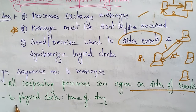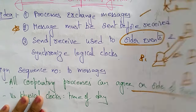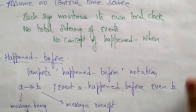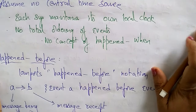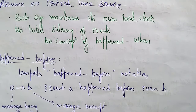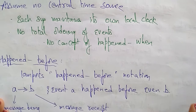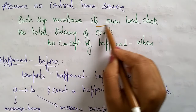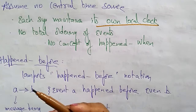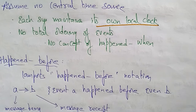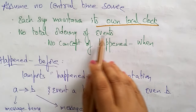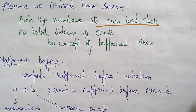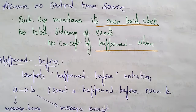Why are we assigning sequence numbers to messages? Because all cooperating processes can agree on an order of events. The logical versus physical clocks difference is completely about time of day. Here we assume no central time source — whereas in physical clocks there is one. Each system maintains its own local clock because it is a distributed system. Distributed system means every system maintains its own local clock, with no total ordering of events — that is, no concept of 'happened when.' We don't bother about when it happened; the thing is you have to maintain an order of events.